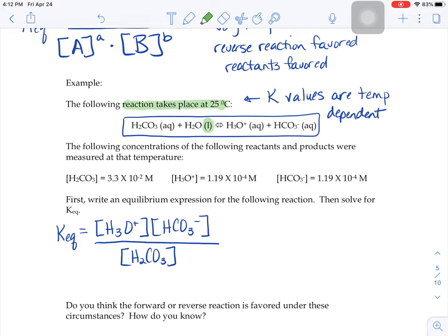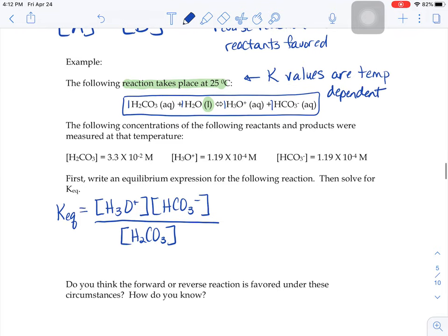In this balanced equation, all the coefficients are just imaginary ones, right? One, one, one, one. And so we don't have any exponents in this equilibrium expression.